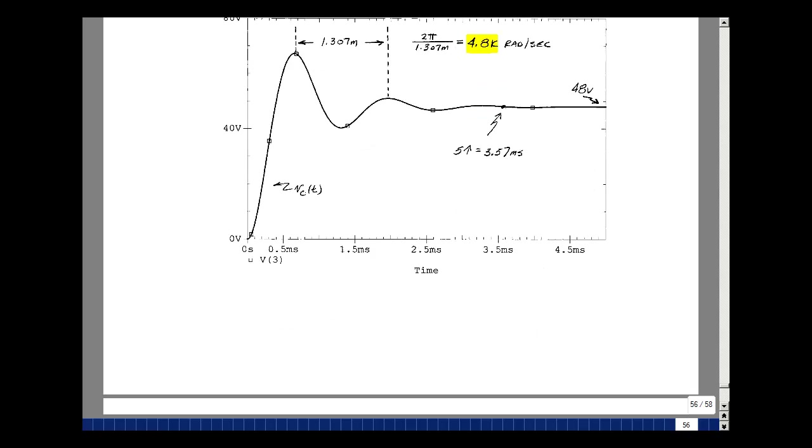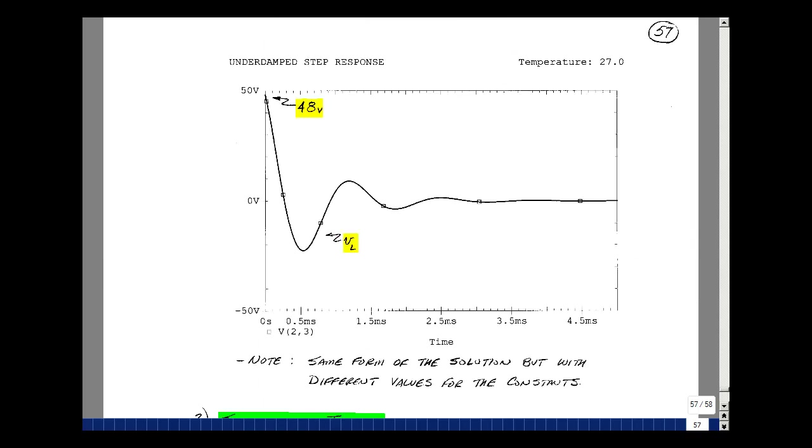We could also look at other voltages and currents in our circuit. Here's a plot of the voltage across the inductance. You can see it starts out at 48 volts. And again has this decaying exponential and settles out at about 5 time constants.